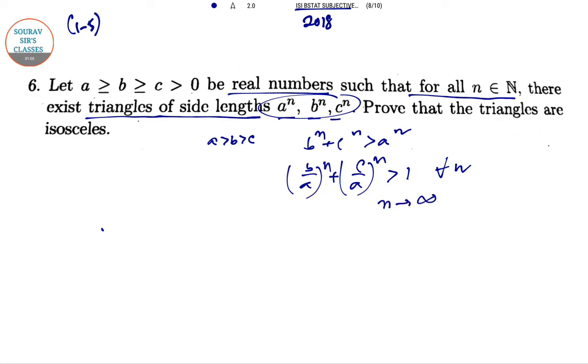Now we take n tending to infinity. So lim(n→∞) [(b/a)^n + (c/a)^n] ≥ 1. But as n → ∞, x^n → 0...